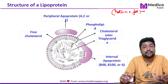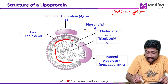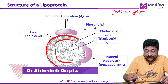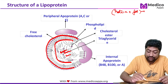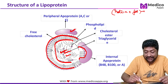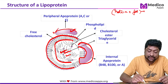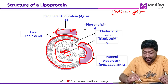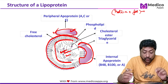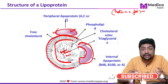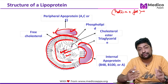This is a general representation of a lipoprotein. A lipoprotein will have a phospholipid layer, and inside that layer is whatever lipid it is going to carry. There will be some peripheral apoproteins and some integral apoproteins. Peripheral means the apoprotein sits on the periphery, while integral apoproteins are integrated with the wall of the lipoprotein.